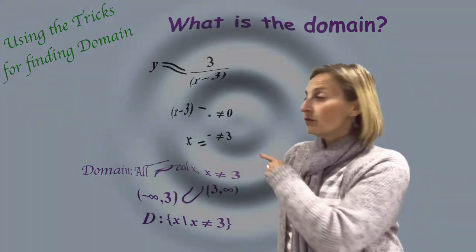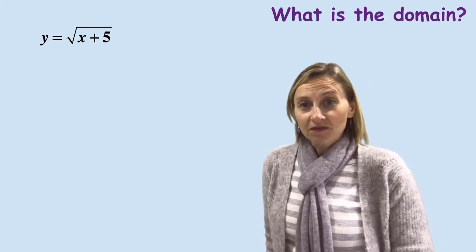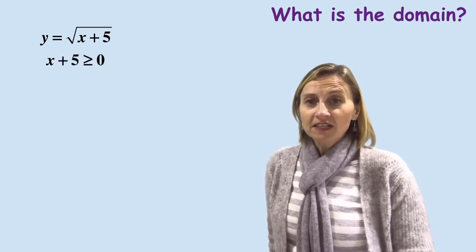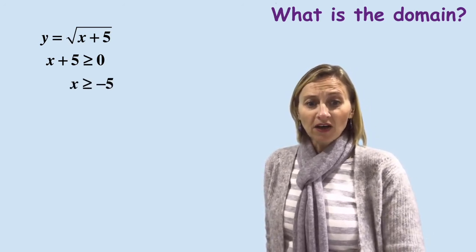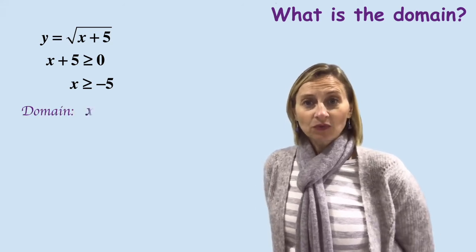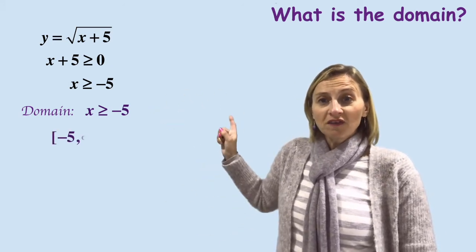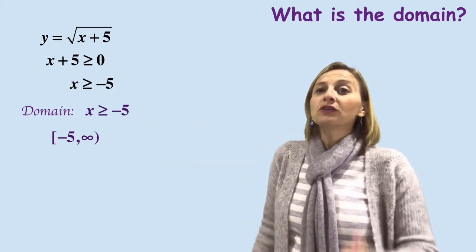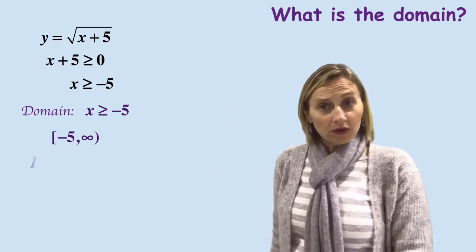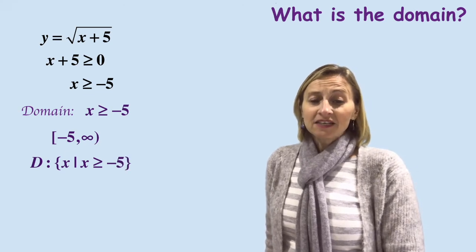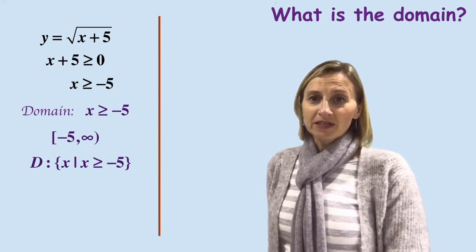Let's take a look at another one: y equals the square root of x plus 5. This one's under a square root, and if it's under a square root we know it can't be negative — it always has to be positive. So x plus 5 has to be greater than or equal to 0 — it can equal 0, remember. So we rearrange and get x ≥ minus 5, and that's the domain. In interval notation, it can be from minus 5 to infinity. It can equal minus 5, so we put square brackets on the left, and round brackets on the right side of infinity.